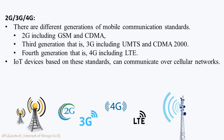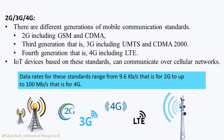There are different generations of mobile communication standards: 2nd generation (2G) including GSM and CDMA; 3rd generation (3G) including UMTS and CDMA 2000; and 4th generation (4G) including LTE. IoT devices based on these standards can communicate over cellular networks. Data rates for these standards range from 9.6 Kbps for 2G to up to 100 Mbps for 4G.